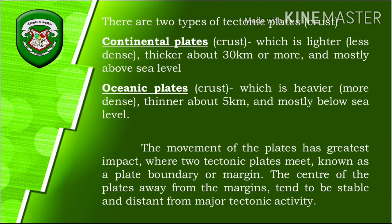Continental plates are thicker compared to oceanic plates — ranging from about 30 kilometers or more — because they are less dense. Oceanic plates are thinner at about 5 kilometers and mostly below sea level, under the oceans. The movement of the plates has the greatest impact where two tectonic plates meet, known as the plate boundary or margin. The center of plates, away from the margins, tends to be stable and distant from major tectonic activity.